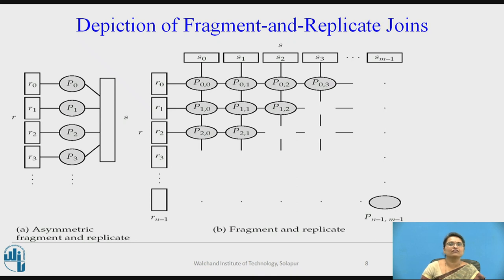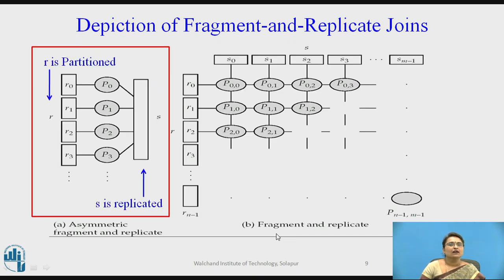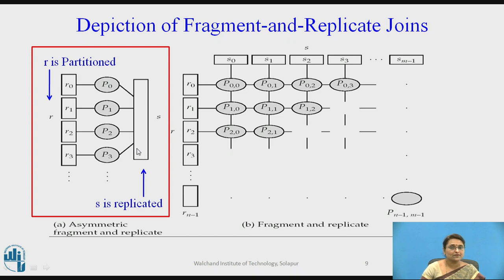This depiction shows Fragmented Replicate Join in two forms. The first is the special case — asymmetric Fragmented Replicate Join. Here, relation R is partitioned into R0, R1, R2, R3, and relation S is replicated, so the same copy is given to processors P0, P1, P2, and P3. The join operations are: R0 joins with S, R1 joins with S, R2 joins with S, R3 joins with S. Every tuple of R is compared with every tuple of S, yet parallelism is achieved.